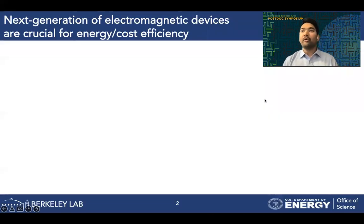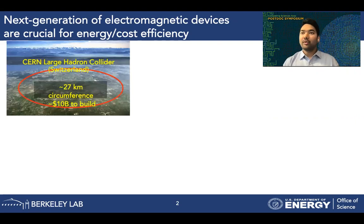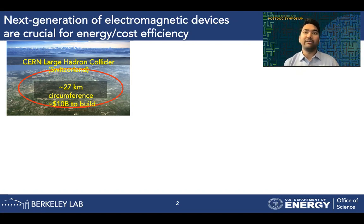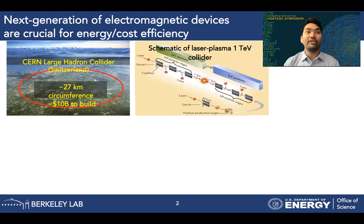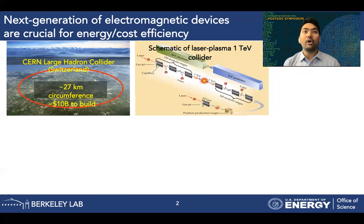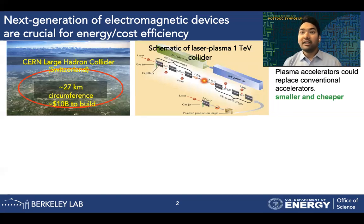Let me begin with a quick review of conventional devices and their limitations, and why we need the next generation of electromagnetic devices. Conventional methods for accelerating charged particles for high energy physics applications such as colliders require devices which are huge in size. For example, the Large Hadron Collider at CERN has a circumference of 27 kilometers, and with a large size comes a huge cost of building and operating these devices. Thankfully, plasma-based accelerators offer a promising solution. The concept of laser plasma acceleration was first proposed a few decades ago, where the idea is to use electromagnetic fields of lasers and plasmas to accelerate charged particles such as electrons or ions to relativistic energies. These devices would be orders of magnitude smaller and much cheaper.